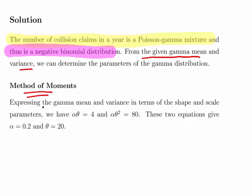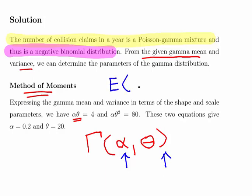What we are going to do here is use the method of moments. This is essentially using the fact that the gamma distribution is gamma alpha and theta, where alpha is the shape parameter and theta is the scale parameter. The expected value, the mean, is simply the multiple of alpha and theta. And the variance is alpha times theta squared.